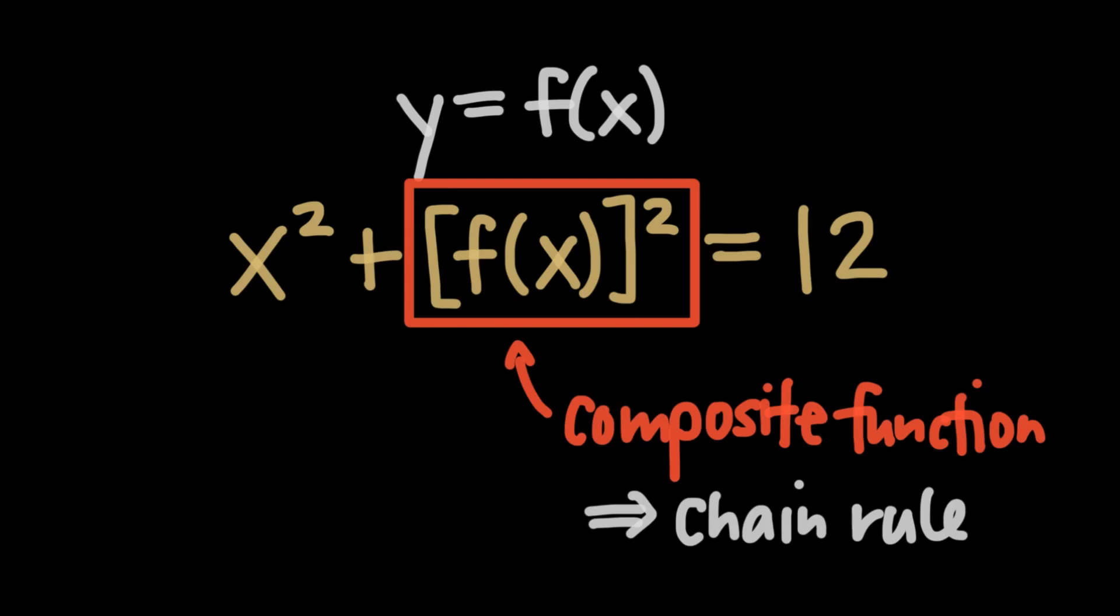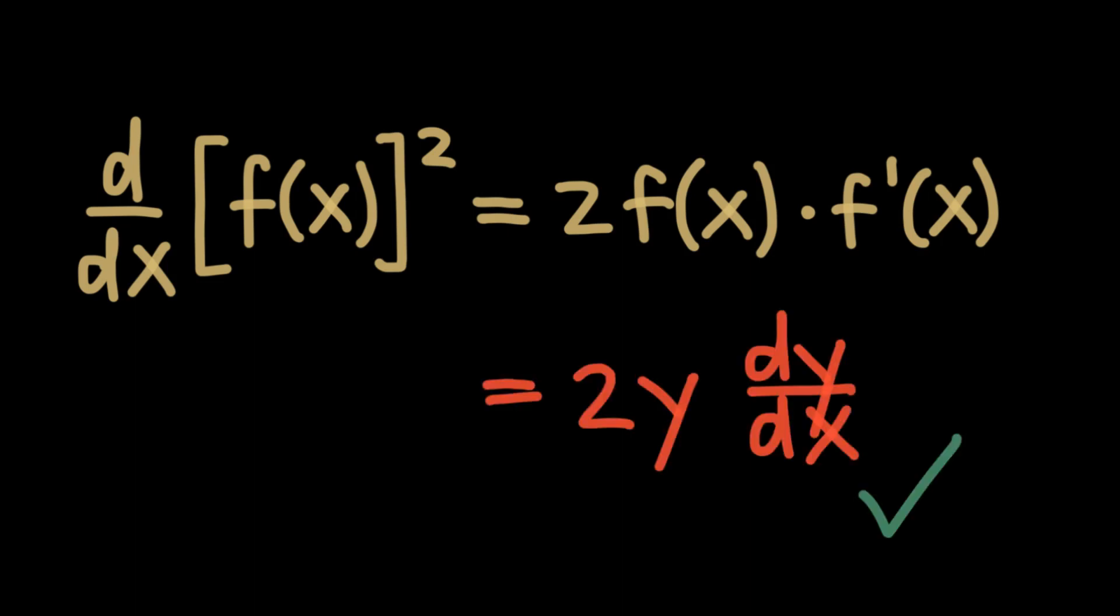So let's go ahead and apply the chain rule here. We'll take the derivative of the outside function, 2f of x, and multiply it by the derivative of the inside function, which we can denote as f prime of x. And if we substitute y back in for f of x, and denote the derivative of f of x as dy over dx, you can see that we end up with the derivative we got using implicit differentiation.